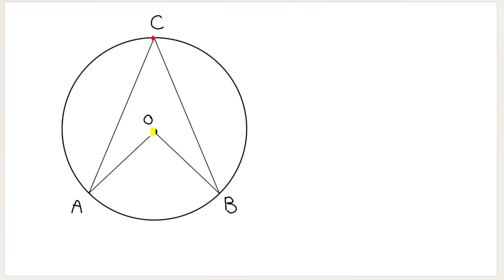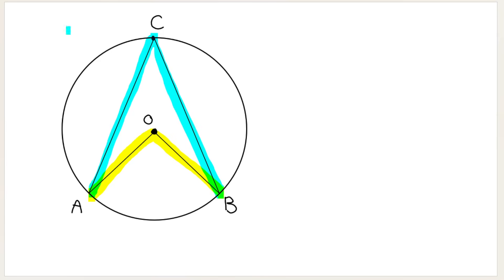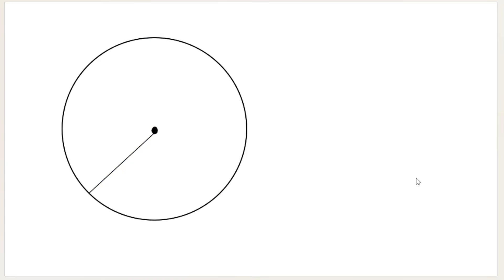If I start at the angle at the center and go back on these two lines, I get to A and I get to B. If I start at the angle at the circumference and go back along the two lines that formed that angle, I also get to A and B. This works no matter how you connect these lines.